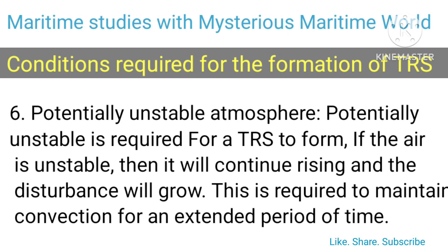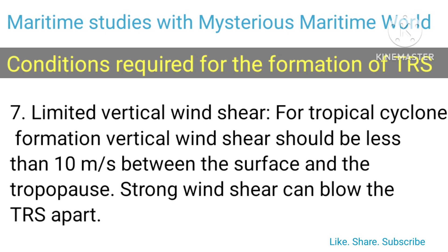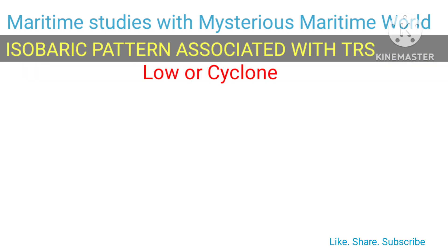Potentially unstable atmosphere: a potentially unstable atmosphere is required for a TRS to form. If the air is unstable, it will continue rising and the disturbance will grow, maintaining convection for an extended period of time. Limited vertical wind shear: for tropical cyclone formation, vertical wind shear should be less than 10 meters per second between the surface and the tropopause. Strong wind shear can blow the TRS apart.